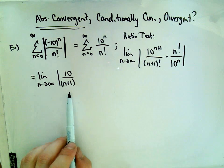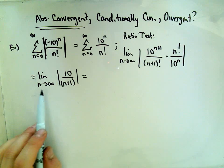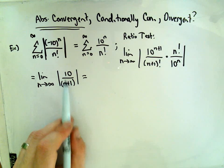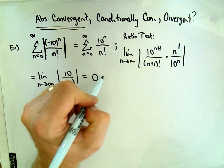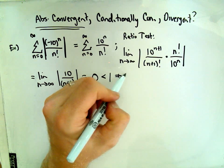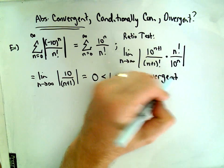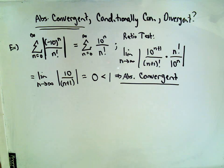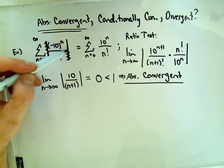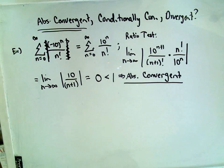We take the limit as n goes to infinity of 10 over n plus 1. The denominator will get really big, so 10 over a big number goes to 0. The ratio test says if it's less than 1, then our series is absolutely convergent. We've now shown that our series is absolutely convergent. So that original series — with negative 10 to the n over n factorial — will also converge.